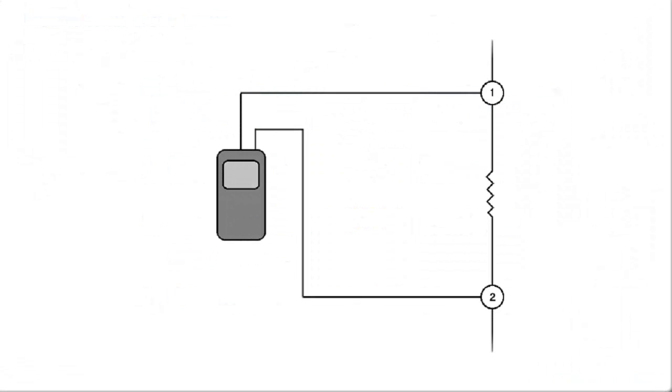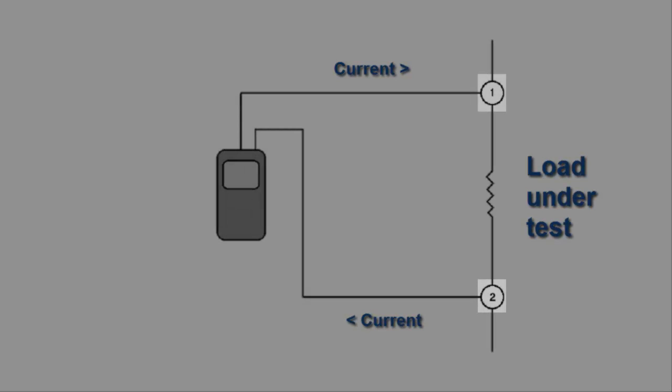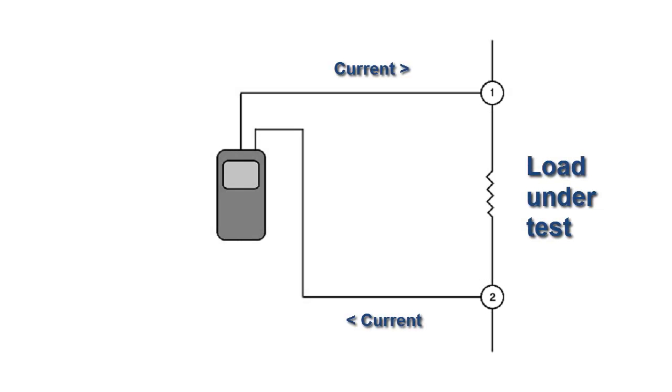In the diagram shown on the screen, the probes numbered 1 and 2 provide constant current to the load under test, and also measure the voltage across the load in order to determine the resistance.